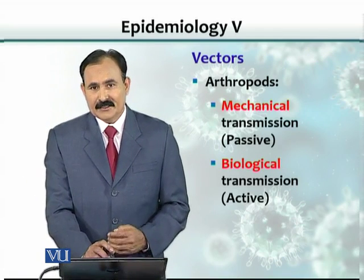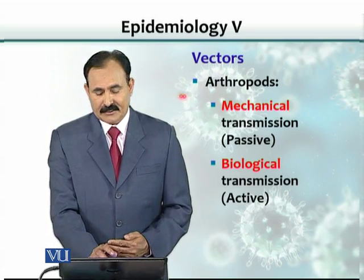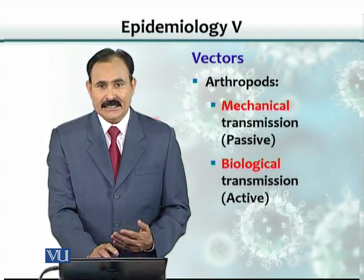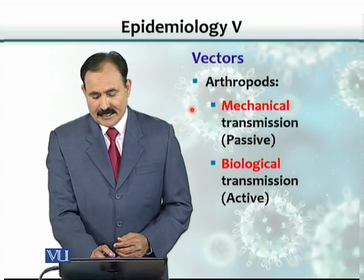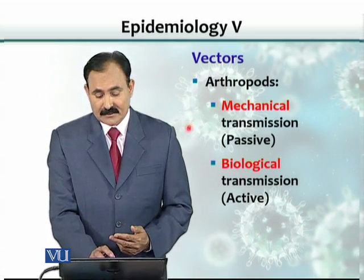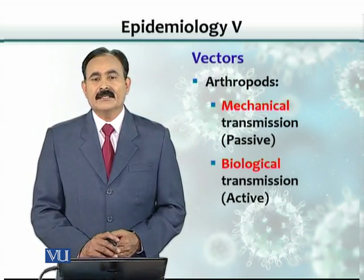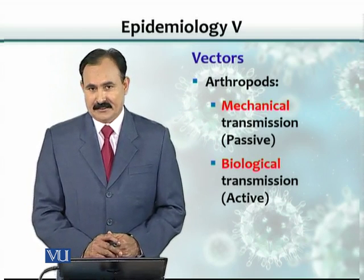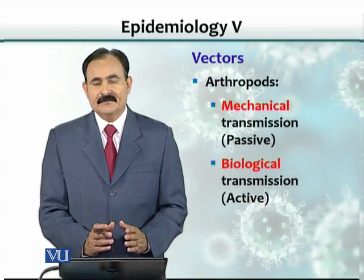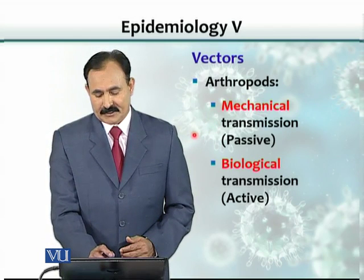The third way of transmission is through vectors. Vectors are basically mostly insects, like flies and ticks. Organisms can be spread mechanically — meaning insects passively carry the organism on their body and simply serve as a means of transmission from one place to another. This is called passive transmission.